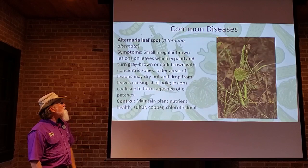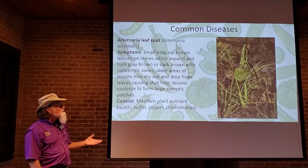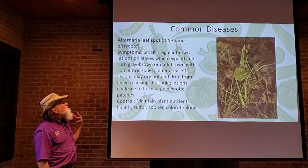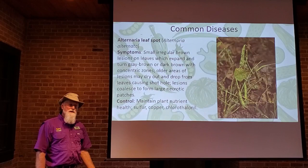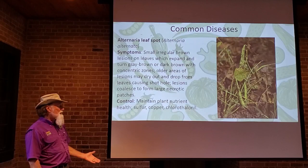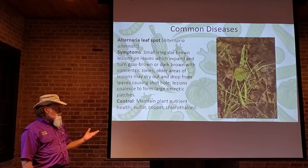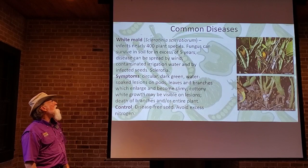Alternaria leaf spot causes brown, irregular lesions with concentric zones. Older lesions may drop out, giving a shot-hole effect, and can coalesce to completely cover leaves. Once conditions are right, it can develop very fast. Remove infected plant parts or entire plants early to reduce inoculum levels. Keeping plants well-nourished allows them to resist or at least tolerate the disease. A few fungicides can also be tried.